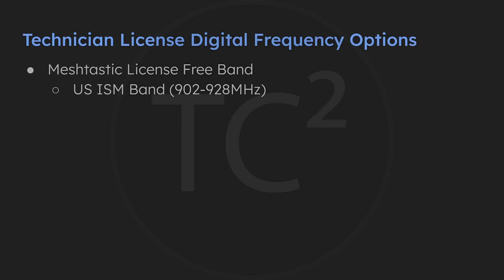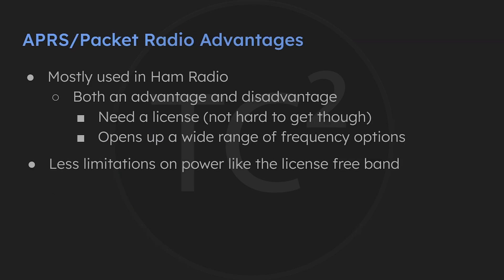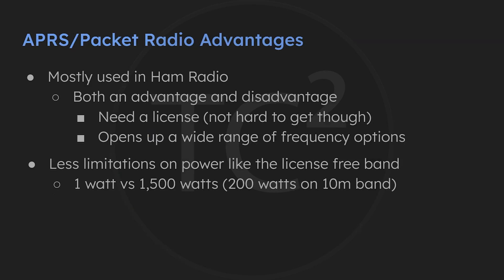While Meshtastic is generally limited to use in the ISM bands like the 915 MHz band we have here in the U.S., having even the lowest ham radio license opens you up to using data modes like this on 10 meters, 6 meters, 2 meters, 70 centimeters, 33 centimeters (which is also the ISM band), 23 centimeters, and even beyond that, well into the gigahertz frequency ranges. You're also not limited to 1 watt of power and can use up to 1,500 watts, with the exception of the 10 meter band which is limited to 200 watts.